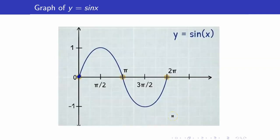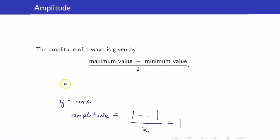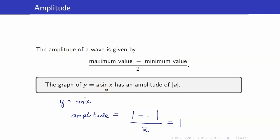If we go back to the graph of y equals sine x, this is the graph of y equals sine x. Its amplitude is 1. Now, what will happen if you have the graph of y equals a sine x? It will turn out that it has an amplitude of the absolute value of a.